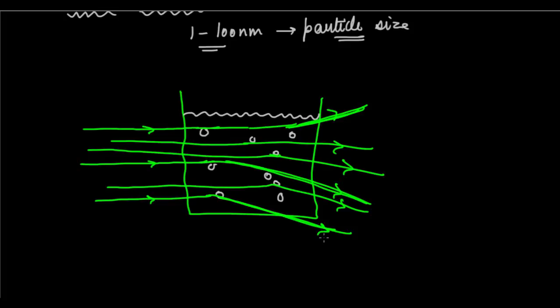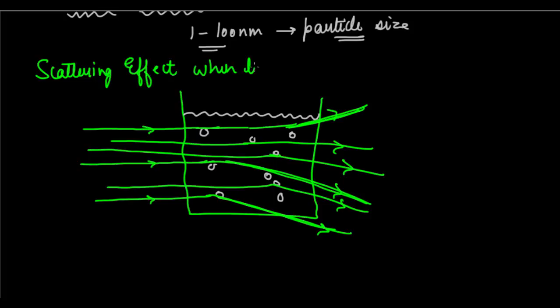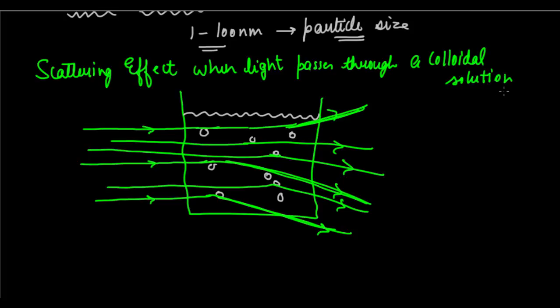Light will be scattered when passed through a colloidal solution because the light particles are going to collide and clash with the particles of the colloidal solution and be scattered in different directions. This scattering effect when light passes through a colloidal solution is what we call the Tyndall effect.